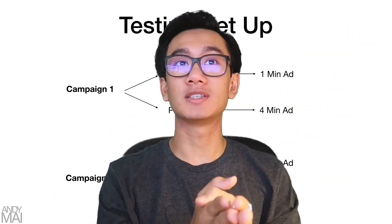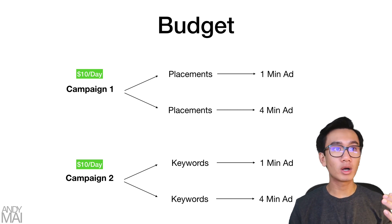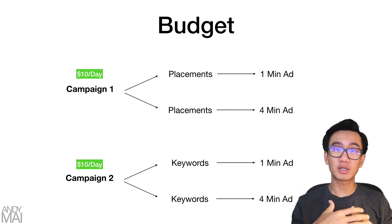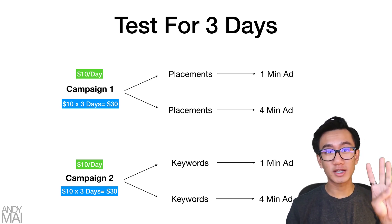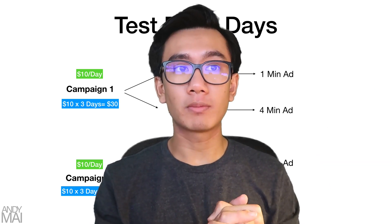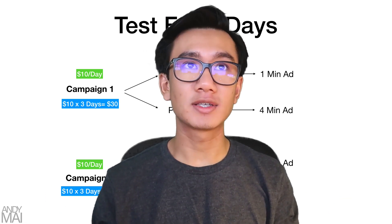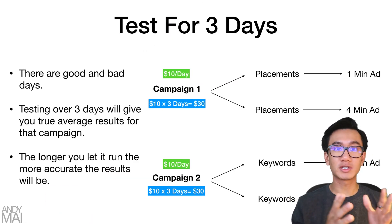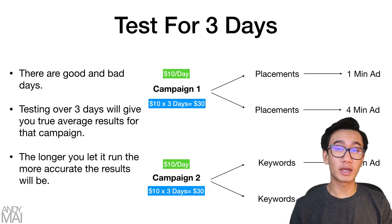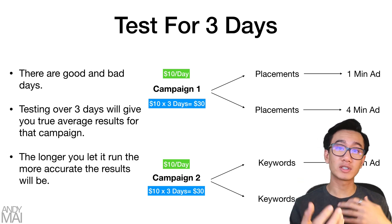So separate everything — that's the blueprint. For budget, you're going to spend ten dollars per day on each campaign: campaign one $10 a day, campaign two $10 a day. That's the minimum; the more you spend the better, because you'll collect more data. Test for at least three days. Three days is the minimum because any less and you won't get an accurate test — there are good days and bad days in advertising.